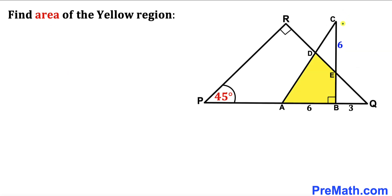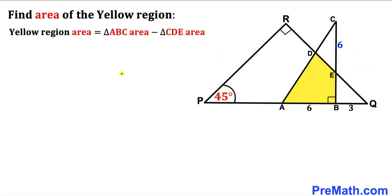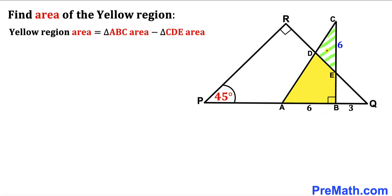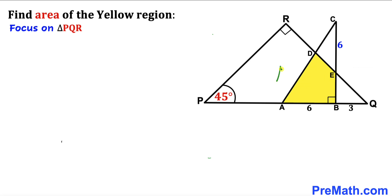Focusing on side CE, which is 6 centimeters: the area of the yellow shaded region equals the area of big right triangle ABC minus the area of triangle CDE. Now looking at right triangle PQR, we know one angle is 45 degrees and another is 90 degrees, so the third angle must also be 45 degrees.